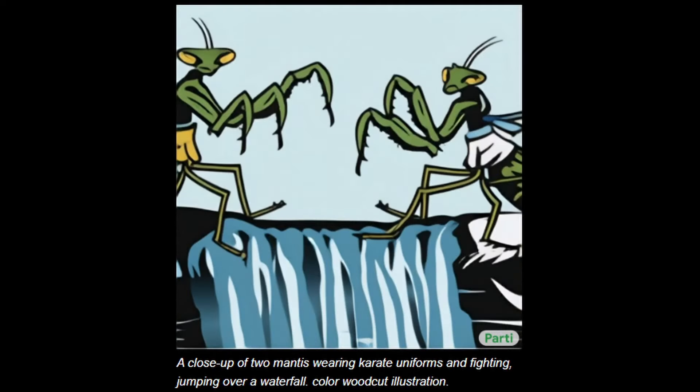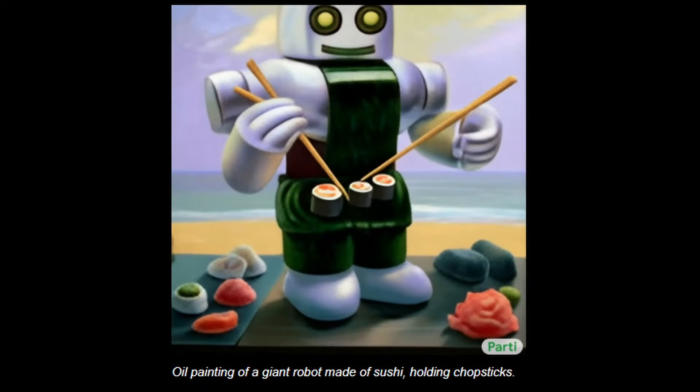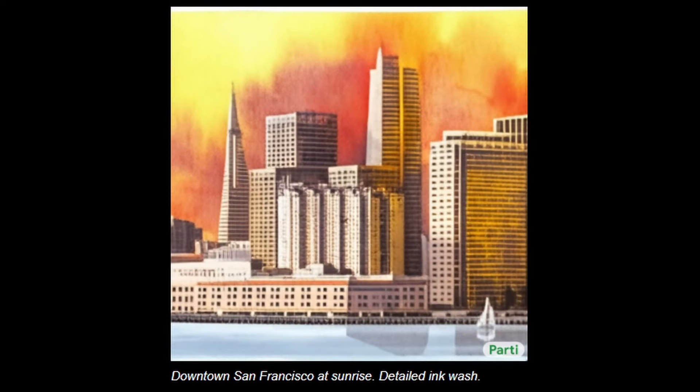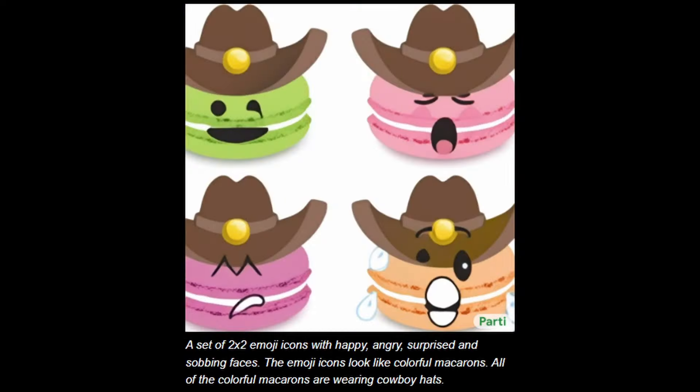For comparison, Google's Imagen uses Diffusion, where the model learns to convert a pattern of random dots into images. Party's approach first converts a collection of images into a sequence of code entries, similar to puzzle pieces. A given text prompt is then translated into these code entries, and a new image is created.